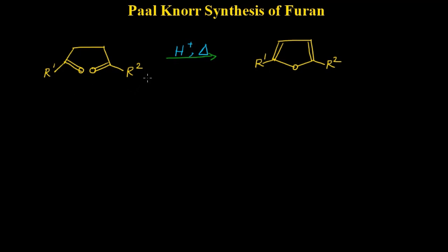Furan or furan derivatives can be synthesized with the help of Paal-Knorr synthesis. In Paal-Knorr synthesis, we should have a 1,4-diketone compound. Here you can see positions 1, 2, 3, and 4, and at positions 1 and 4 we have two carbonyl groups. This is the minimum requirement in Paal-Knorr synthesis.